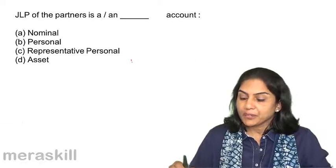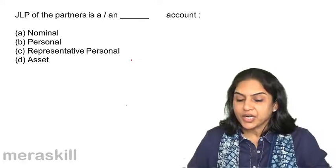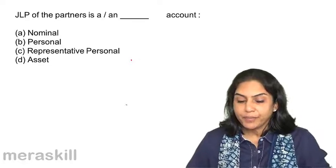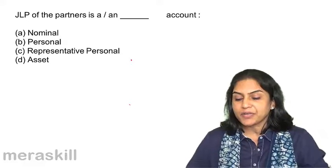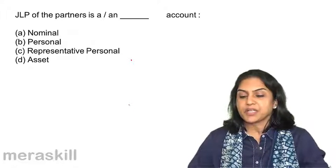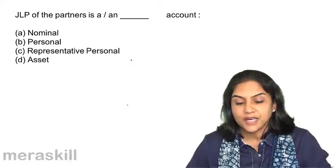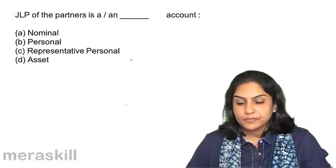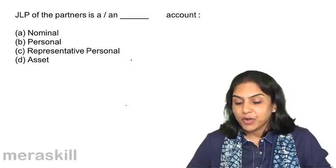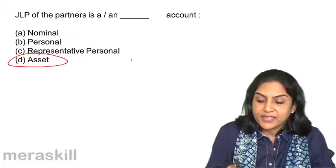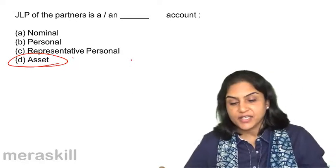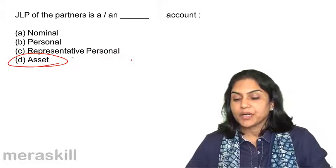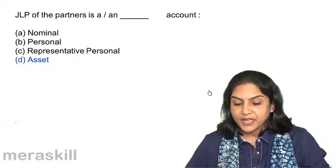JLP of the partners is a dash account. Is it a nominal account, personal account, representative personal account, or an asset account? Joint life policy is an asset. Joint life policy of the partners account is an asset account. Correct answer D.